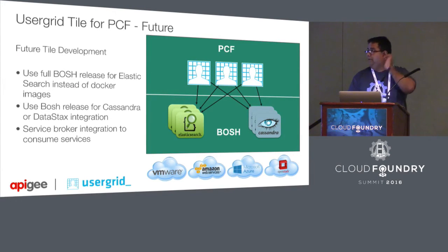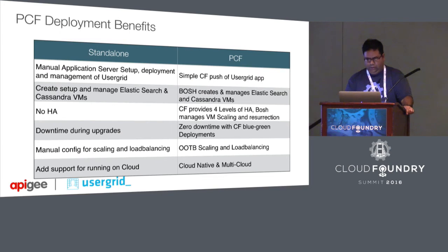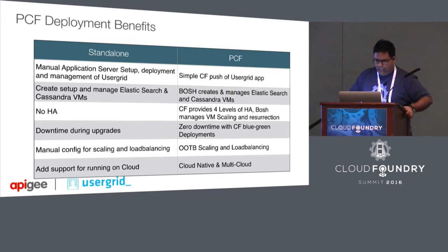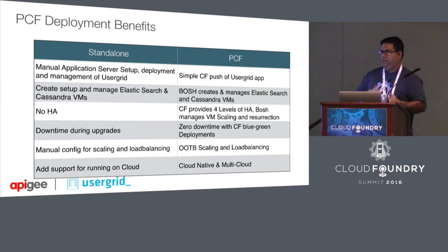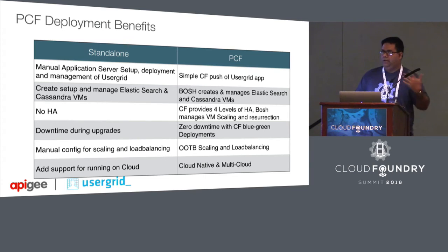The plan going forward — depending on user preference, we would invest time and effort to build a full BOSH release for Cassandra and Elasticsearch. There might also be a service broker integration — we already have a Cassandra service broker, so we'd be able to let UserGrid consume Cassandra services through a service broker rather than doing a hardcoded endpoint integration. We might also be working more with Apigee for other products like Edge Gateway in the future.